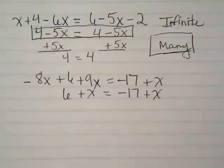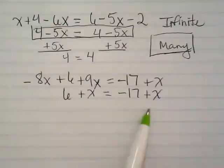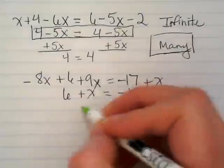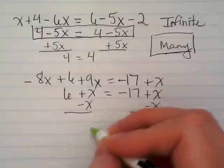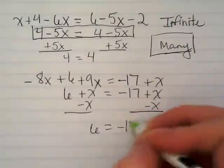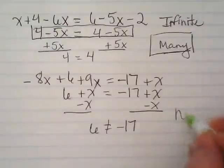They don't look the same. But what has me concerned is that there's only an x here and only an x here, and they're both positive. So if I simplify for this, I'm going to end up with 6 equals negative 17. Is that a true statement? No. So there's no solutions.